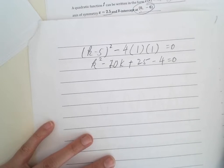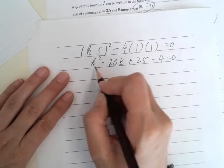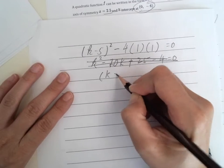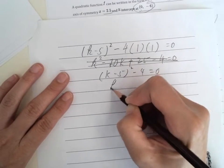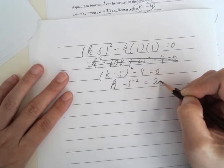So, and then rearrange a little bit. So, K minus 5 square minus 4 equals to 0. K minus 5 square equals to 2.